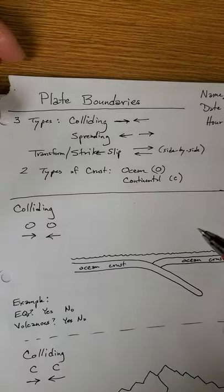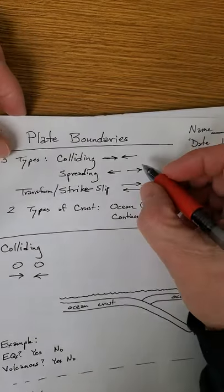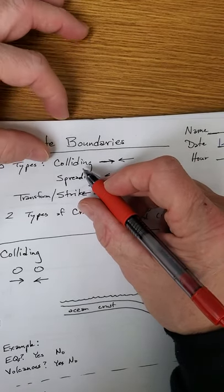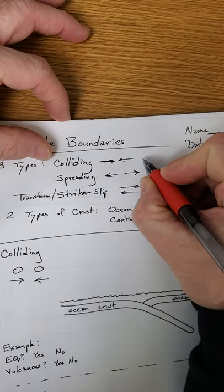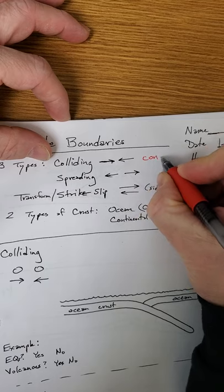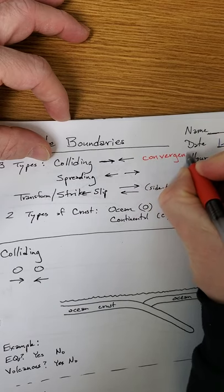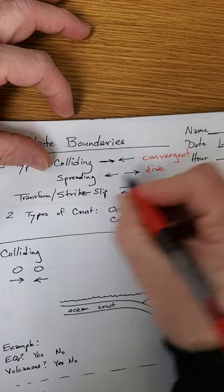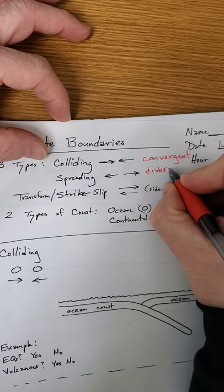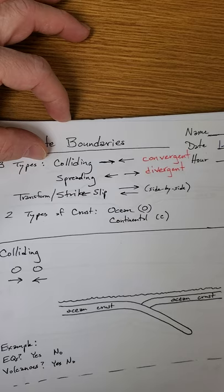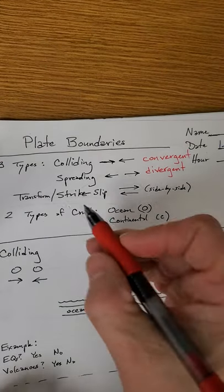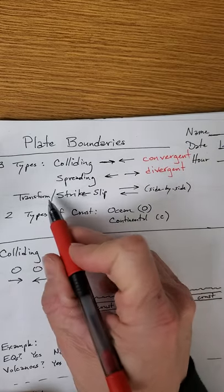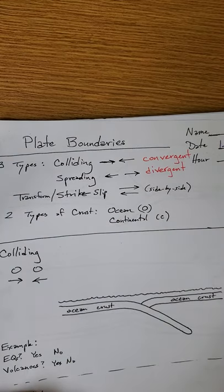Now, I'm going to use red because it shows up nicely. Different people, different videos, different textbooks will use different words for colliding. You can also hear it called convergent. And spreading boundaries can be called divergent. It's the same thing. All three types have two different names. Colliding, convergent, spreading, divergent, and transform or strike slip.